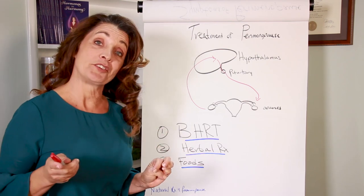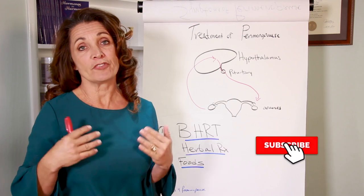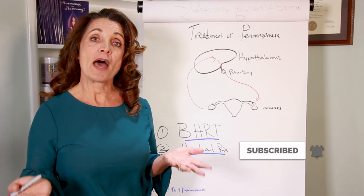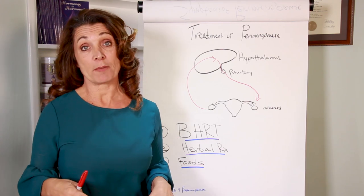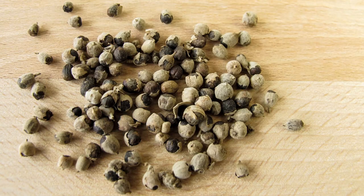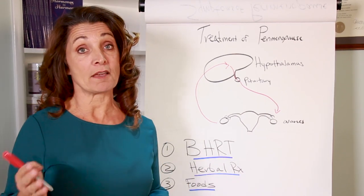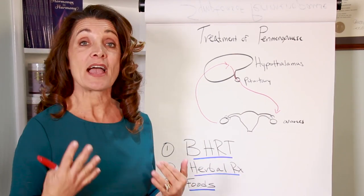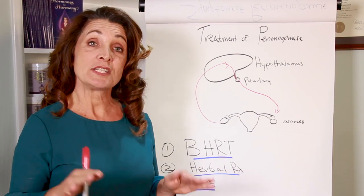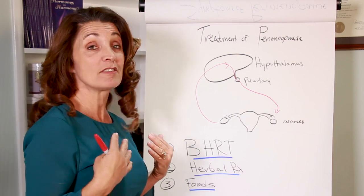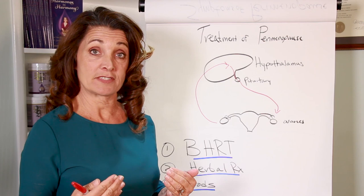The second thing that you can do is use herbal remedies. There are many herbal remedies that have been used for centuries for women who have issues with perimenopausal symptoms. One of the classic remedies is chaseberry. From the vitex tree, chaseberry actually has a progestational or progesterone-like effect on your body, and that can help to regulate your cycles. It can help to regulate your moods, decrease the premenstrual symptoms that get so aggravated in perimenopause and really help to balance out your system.